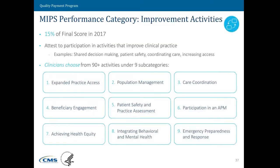Let's move on to slide 37, the Improvement Activities performance category. This is the new category available under MIPS — it was not previously available under the PQRS, VM, or Meaningful Use Program. What Improvement Activities does is it really deals with practice improvements that you make within your own practice. We have over 90 activities to select from that span nine categories, which are listed on the slide. Generally, for most clinicians, to get the fullest points under Improvement Activities — there are 15 points here — they would have to do no more than four activities.